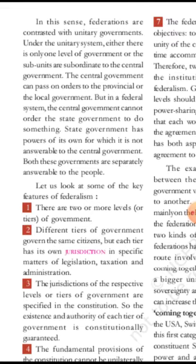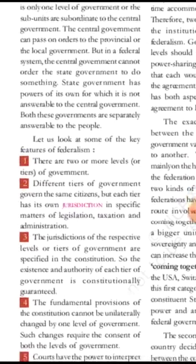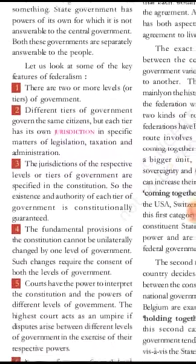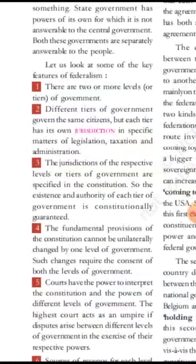In a unitary system, state governments like the Chief Minister's government would be subordinate — if the Prime Minister wants to make some policies for particular states, those states would have to accept them. But in the federal system, the central government cannot order the state government to do something. State government has powers of its own for which it is not answerable to the central government. Both these governments are separately answerable to the people.